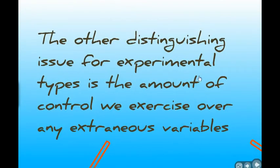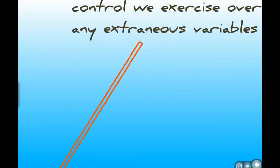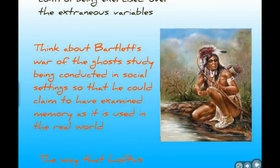The other distinguishing issue for experiment type is the amount of control we exercise over extraneous variables — those things that might influence the dependent variable but that we're not interested in exploring, so we try to hold them as constant as possible. With relatively low levels of control, that might be for reasons of greater ecological validity, as in Bartlett's War of the Ghosts.